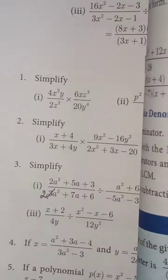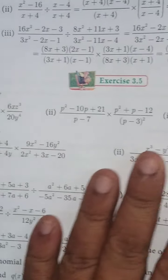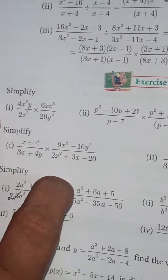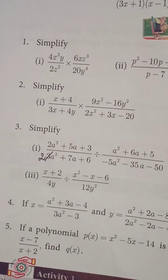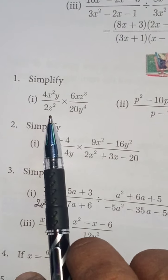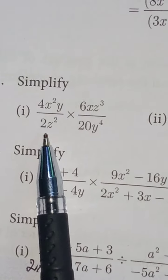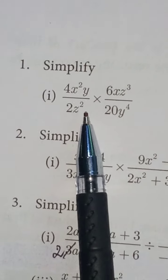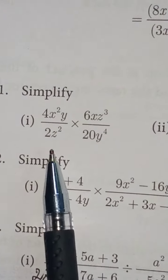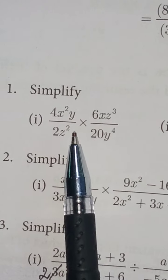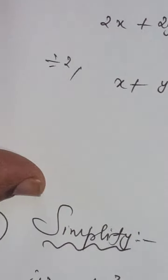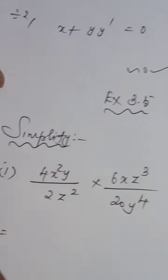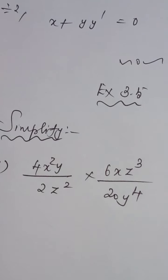Before doing this problem, a small correction to be done in exercise 3.5 in the previous exercise, in question number 1, subdivision number 1, already completed. Particularly in the denominator, instead of 2z squared I had written 2x squared — that has to be changed first. After that you can get into the next exercise. Here is the problem: exercise 3.5 question number 1, subdivision number 1.